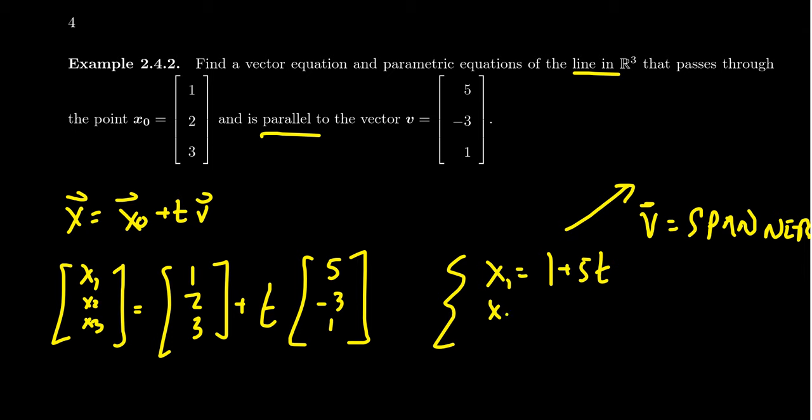The other coordinate, X2 is given as 2 minus 3T. And then lastly, X3 is given as 3 plus T. And so this gives us the parametric equations of our line right here.